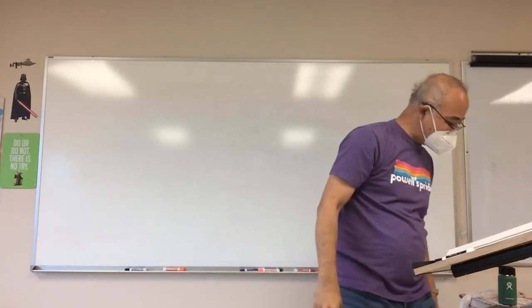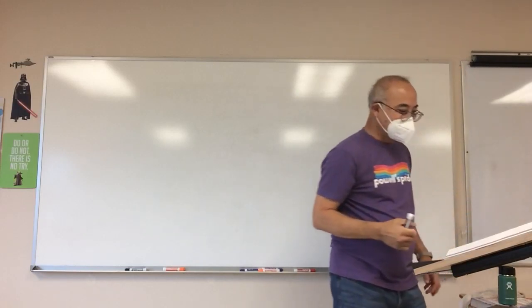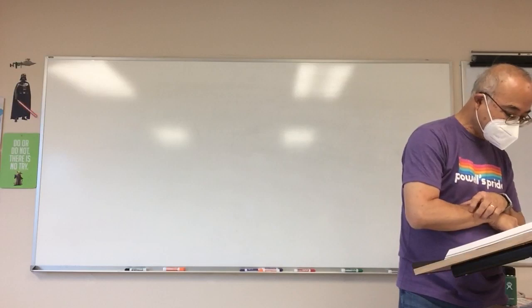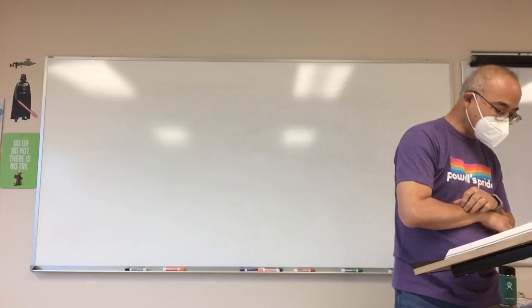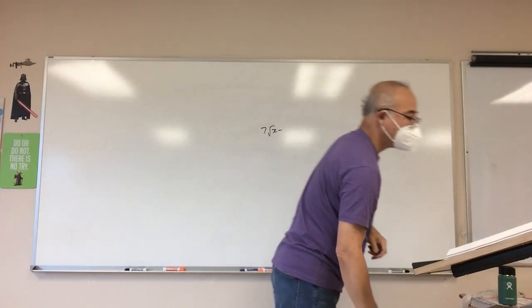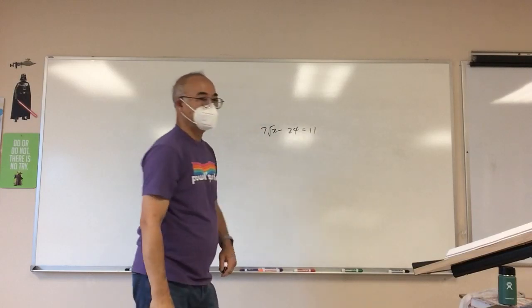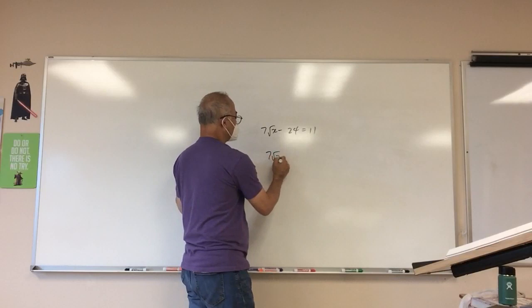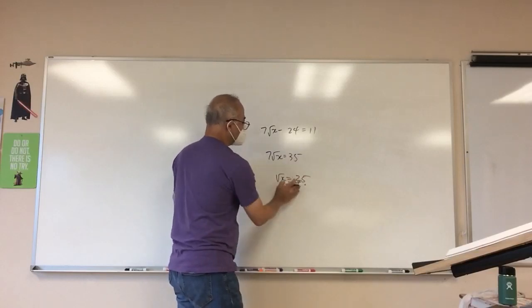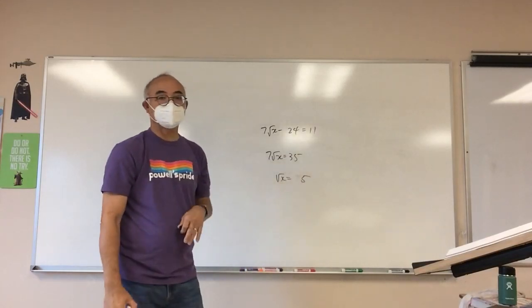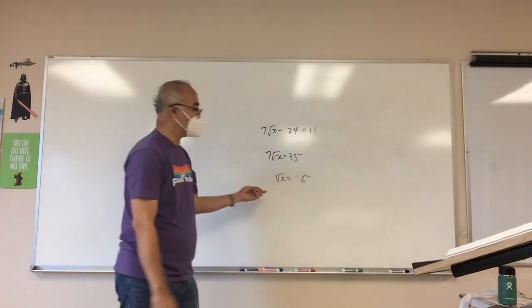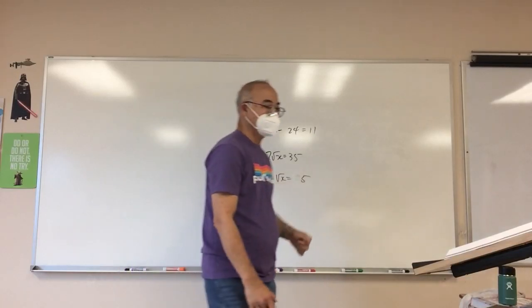Let's go to page 270. Let's do some radical equations. We haven't done any of this. Although these are fairly simple, right? 7 root x, 24, 11. Move the 24 over. Oops, not 25, 5. So x is going to be equal to? Plus or... No, just 25. Just 25, not plus or minus 25, because you can't have a negative under the root here.